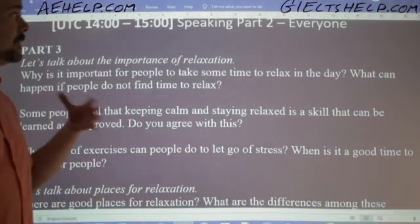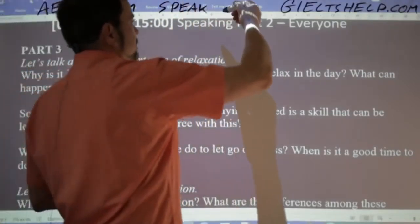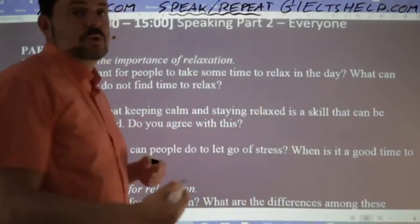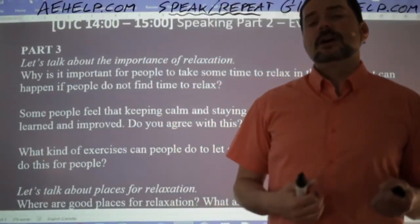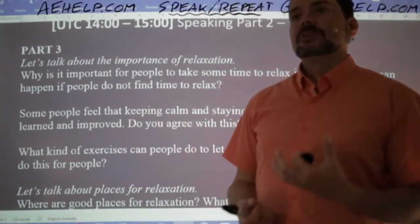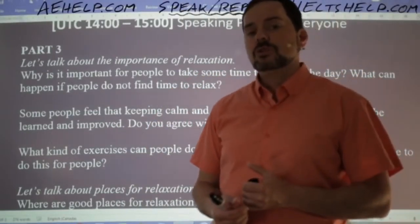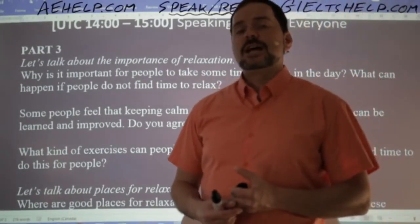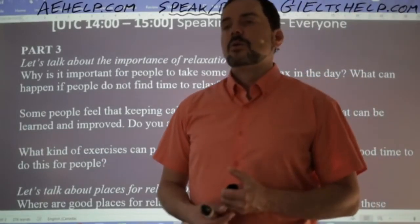So this is speaking. We're going to get right into it — make sure to speak and repeat. We just finished a class on speaking part two, which was the cue card. The cue card topic was a place where I go to relax. We talked about the Banff Springs resort hotel in the Rocky Mountains, which has swimming pools, restaurants, a spa, massage therapy, physiotherapy, and all kinds of great amenities.